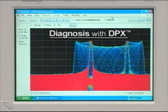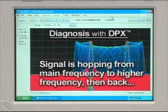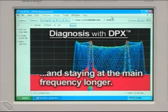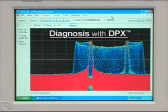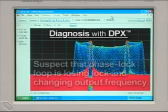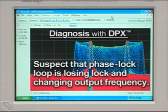With DPX, we can quickly and easily see that the signal is hopping at some stage from its main frequency to the higher frequency and then back again, staying at the main frequency for longer periods of time. We're also seeing overshoot, so we suspect the problem is because our phase lock loop is temporarily losing lock and changing the output frequency.